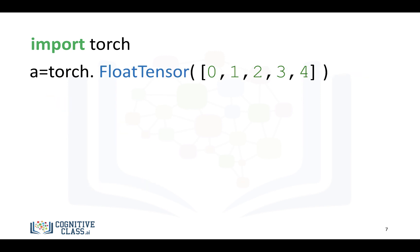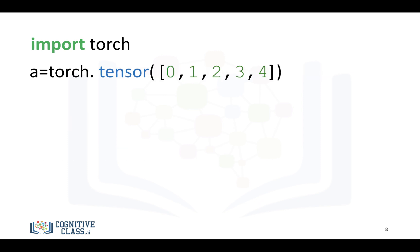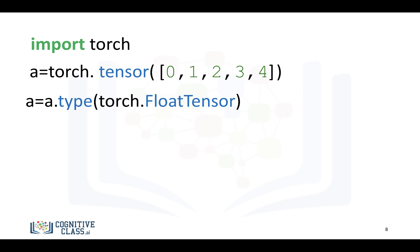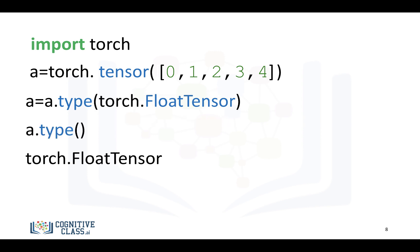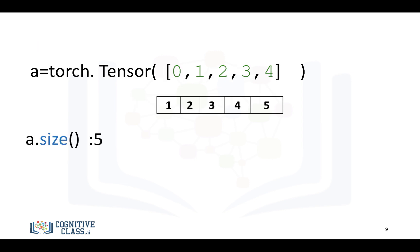We can select the type of tensor we'd like to cast the list to. In this case, we have the method float tensor, which will cast the integers into a float — and we can verify that using the type method, and we get a float tensor. We can also change the type of an existing tensor using the method type, with the argument being the desired tensor type, such as float tensor. We can also find the size of the tensor — in this case it's 5 — and the number of dimensions is 1.